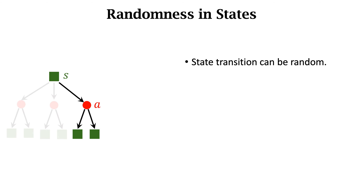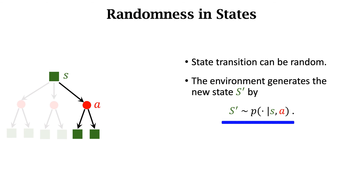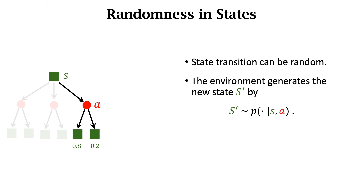The other source of randomness is state transition. We observe the current state S, the agent executes action A, and the next state is decided by the environment. The next state is randomly sampled from the state transition function P. Even if the current state S and action A are both given, the next state is not determined — it has randomness. For example, the next state is randomly chosen from two options with probabilities of 0.8 and 0.2 respectively. Either can be the next state.